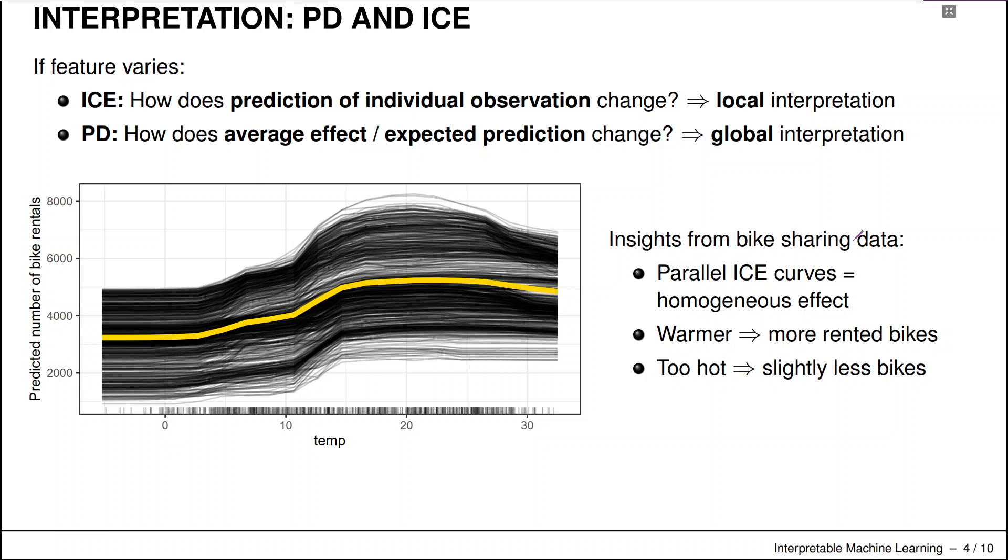The reason why we usually plot these ICE curves next to the PDP curve is that we would like to see the general functional shape of the PDP curve reflected in all of these ICE curves. So our ICE curves should reflect a homogeneous effect because only then we can be reasonably sure that there are no interactions going on in the background.